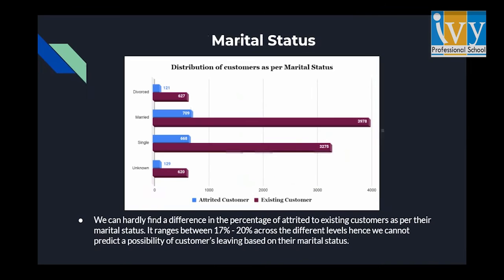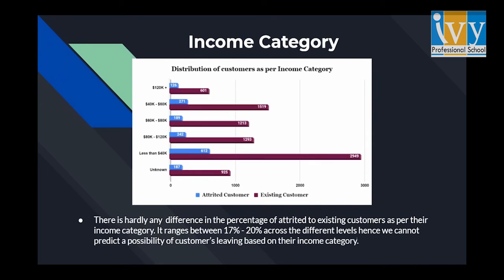Moving on to marital status — we can see there is hardly any difference in the percentage of attrited to existing customers based on the different levels of marital status. Going to the next factor, which is income category, we observed that the number of existing customers is highest for those with income less than $40,000. However, if we look at the percentage of attrited to existing customers, there is a fair range of about 17 to 20% across the different income levels.